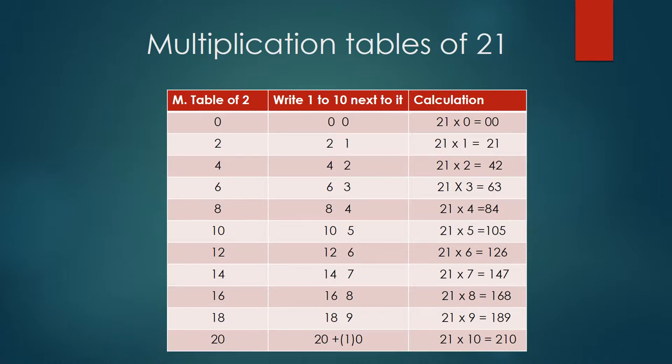If you observe number 21, it is made up of two numbers: 2 and 1. So we are utilizing these numbers separately like this. In the first column we are going to write the multiplication table of 2. So you observe here 2 zeros are 0, 2 ones are 2, 2 twos are 4, all the way up to 2 tens are 20. Then we have repeated that 2 times table over here. And simply we are writing 1 to 10 next to it.